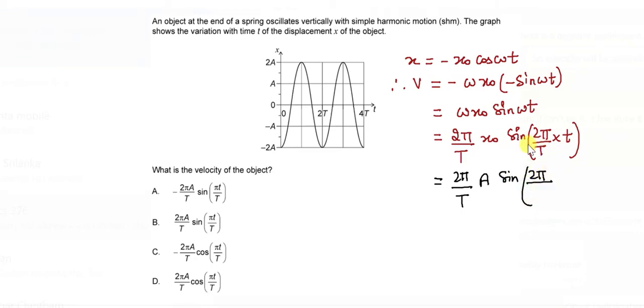T denotes the time period. What is the value of time period here? One wave is completed in 2t. So I just put it as 2t into t. Now 2 and 2 would cancel. Therefore we get the final answer for velocity of the object as 2 pi a by t sine of pi t by t, which gives me B to be the correct option.